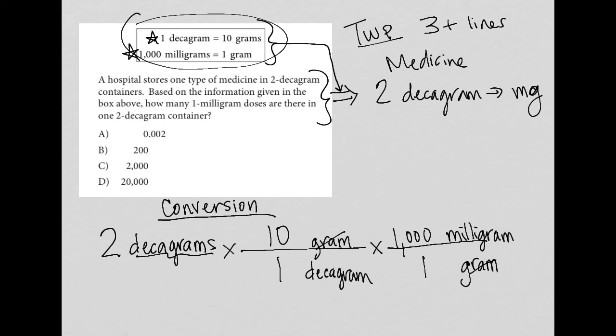So now if I were to do the cross-cancellation of units, I find that the only unit I will have left is milligram, which is exactly what I want. So now just go to my calculator. I'm going to multiply 2 times 10 times 1,000. 2 times 10 is 20. 20 times 1,000 is 20,000.